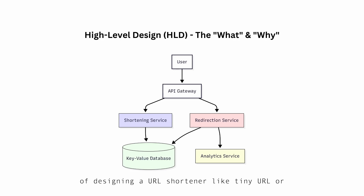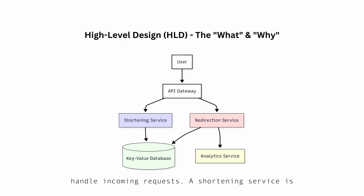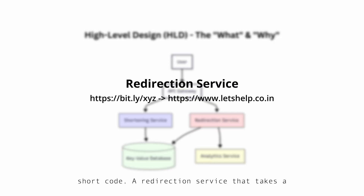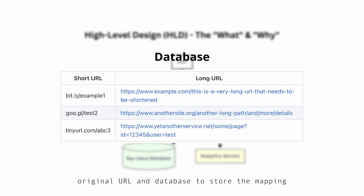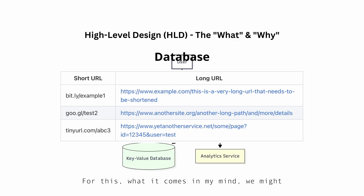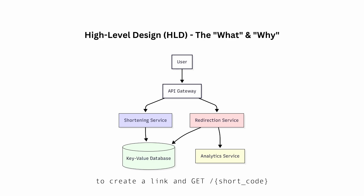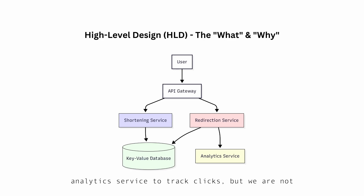Let's take a simple example of designing a URL shortener like TinyURL or Bitly. At the HLD stage, we identify an API gateway to handle incoming requests, a shortening service responsible for taking a long URL and generating a shortcode, a redirection service that takes a shortcode and redirects the user to the original long URL, and a database to store the mapping between shortcodes and long URLs — for which we might decide on a NoSQL key-value store like Redis or Memcached. We would design high-level API endpoints like `/api/shorten` to create a link and a GET endpoint like `/{shortcode}` to redirect. We might also consider an analytics service to track clicks, but we are not yet detailing how the shortcode is generated — just that a service will do it.